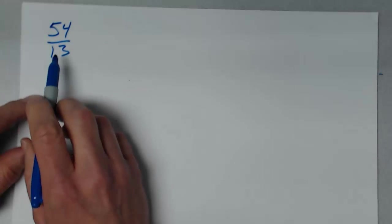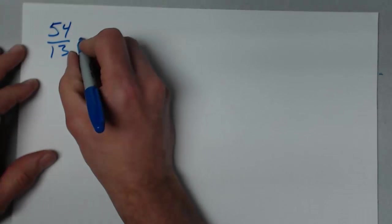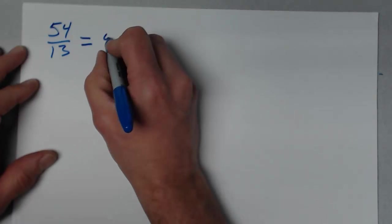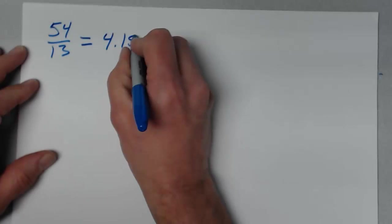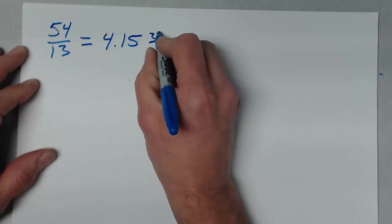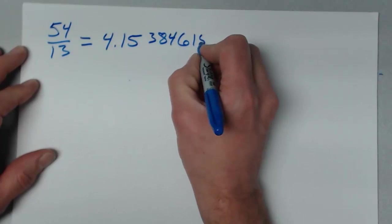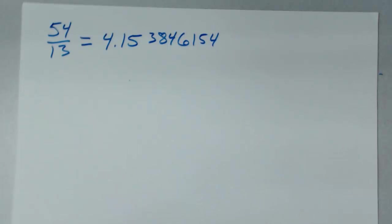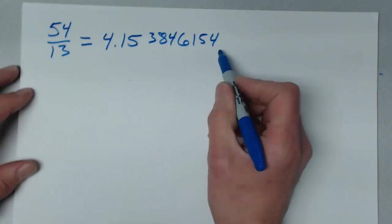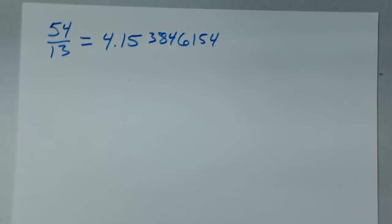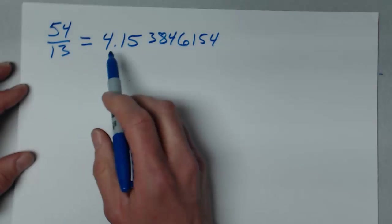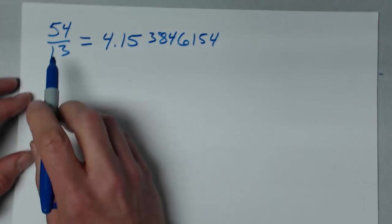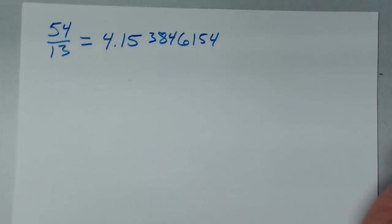54 divided by 13. Notice both the top and the bottom have two significant figures, so that's all I can keep in the result. When I do it on my calculator, it shows 4.153846154, and it just keeps going. But with two significant figures in each, all I can keep are two significant figures.